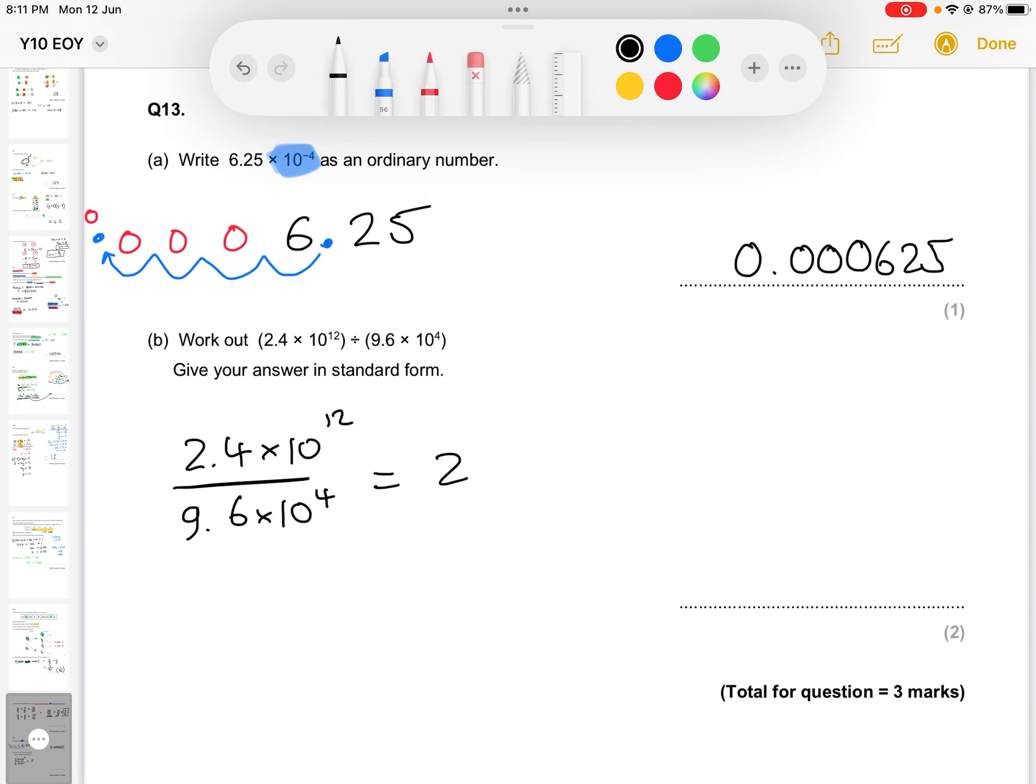Now, if you've done that, you have not fully answered the question because it stipulates that it wants the answer in standard form. So it wants us to write this as something times 10 to the power of something.